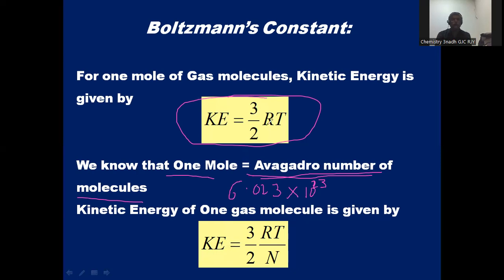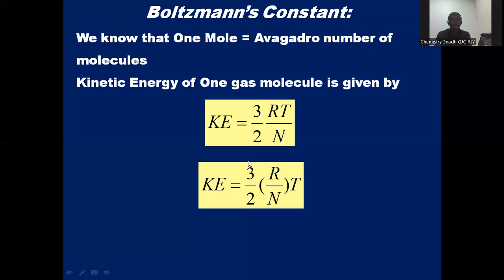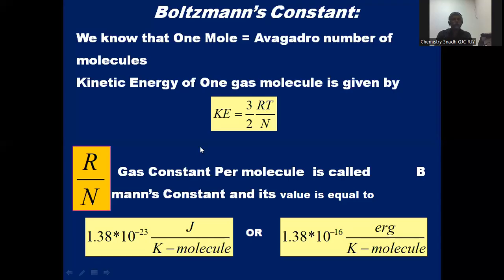For 1 mole of gas, kinetic energy = 3/2 × N_A × (something per molecule). For 1 gas molecule, kinetic energy = 3/2 × (R/N) × T, rearranging the terms to get 3/2 × (R/N) × T. In this expression, the R/N value — that is, gas constant per molecule — we are calling it as Boltzmann's constant.